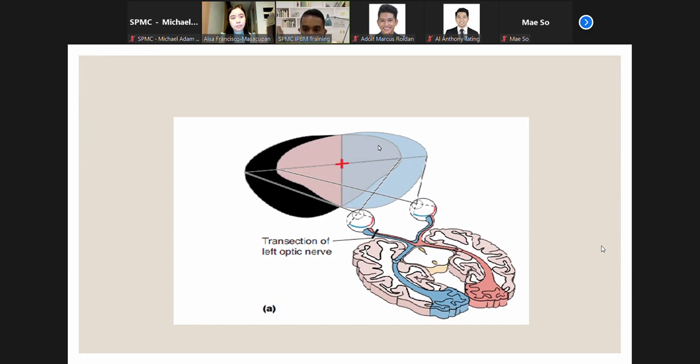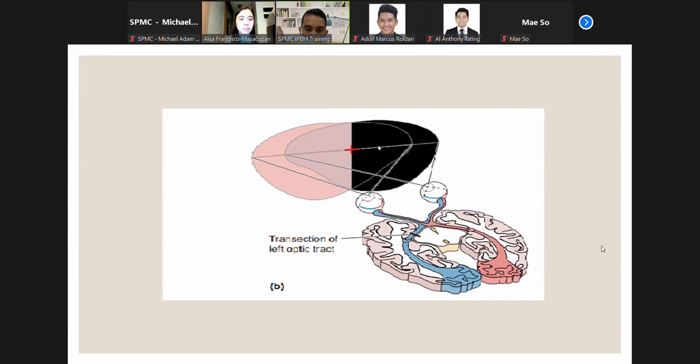If the optic nerve on the left side is cut, vision will be lost completely in the left eye. Blindness is only in the monocular portion of the left hemifield because the right eye still sees most of the left visual field. On the other hand, if the optic tract on the left side is cut, vision will be lost in the right visual field of each eye. This is because of decussation—the fibers have already crossed.